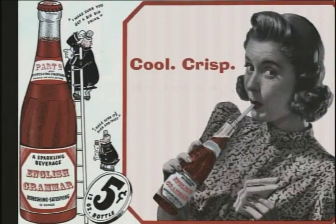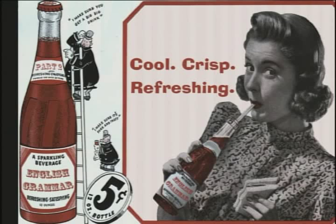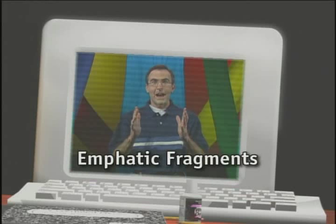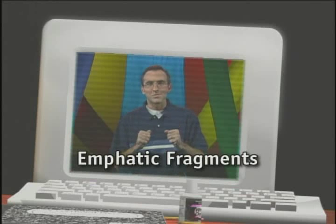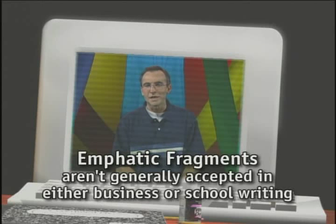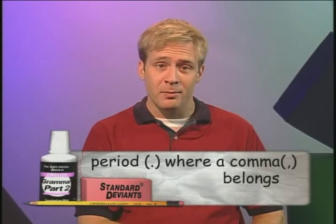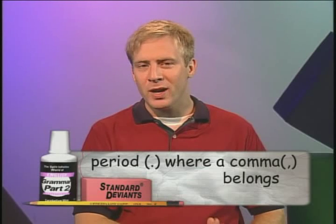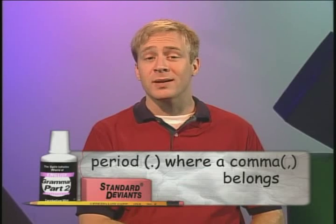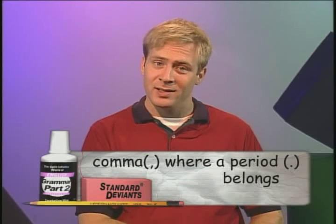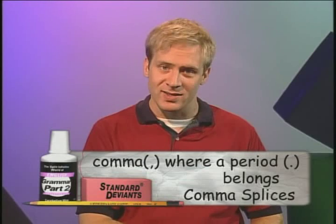"Cool, crisp, refreshing." English grammar. These are called emphatic fragments, and although they can be extremely effective in advertising, they aren't generally accepted in either business or school writing. So that's what happens when you put a period where you're meant to put a comma. But what happens when you put a comma where you're meant to put a period? Well, those are comma splices.